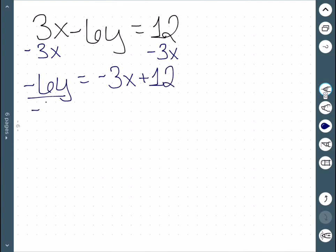We can then divide everything by -6. On the left, I'm left with y. On the right, -3 divided by -6 is 1/2, and 12 divided by -6 is -2. Therefore, I now have this equation in slope-intercept form.